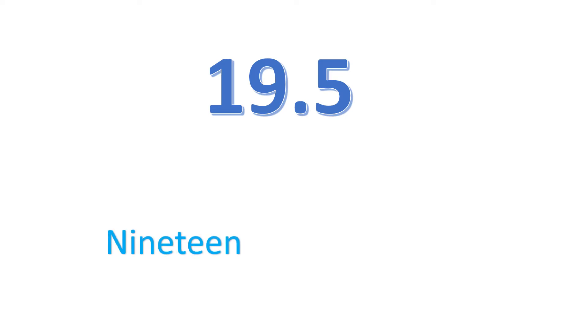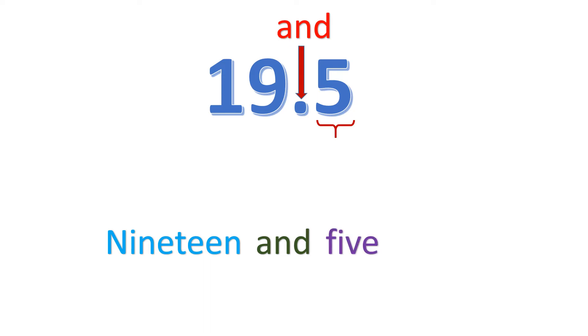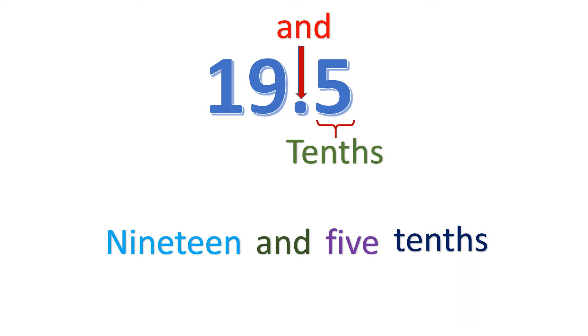Now we have a whole number and a decimal: 19.5. We start with the whole number, which is 19, and then the decimal point, which we read as 'and.' So it's 19 and. The decimal part is 5, and it's in the tenths place, so we have 5 tenths. The whole decimal number is 19 and 5 tenths.